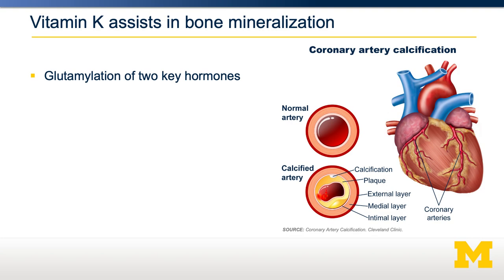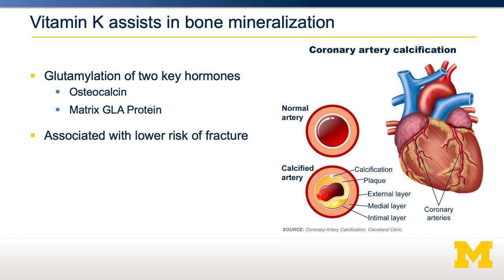There have been other suggested roles for vitamin K, for example in bone mineralization. Two key proteins involved in bone mineralization also undergo gamma-glutamyl carboxylation dependent on vitamin K: osteocalcin and matrix GLA protein. It has long been known that low levels of dietary vitamin K are associated with lower risk of fracture, suggesting that vitamin K may play a role in bone formation.